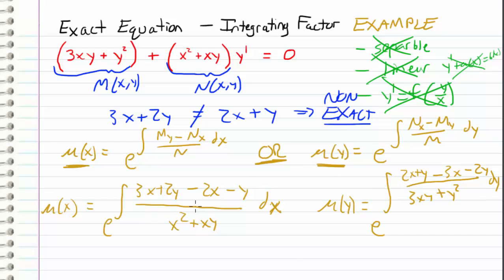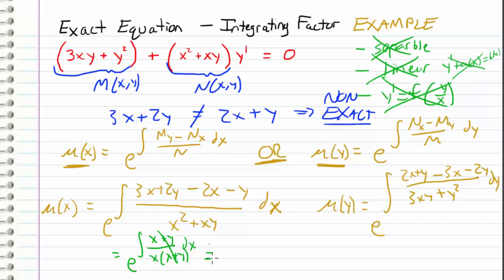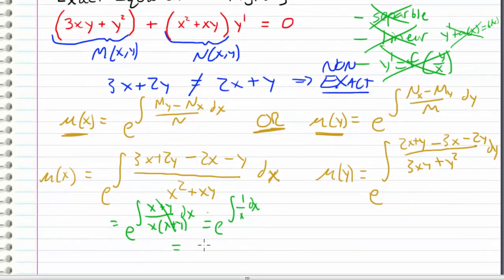Which of these integrals is easiest to compute? Well, I can reduce mu of x to be equal to e to the integral of — we get x plus y, all over x times x plus y, factoring out an x. These cancel, leaving us with e to the integral of 1 over x dx, which comes out to be e to the natural log of x, which is just equal to x. That comes out pretty nice.